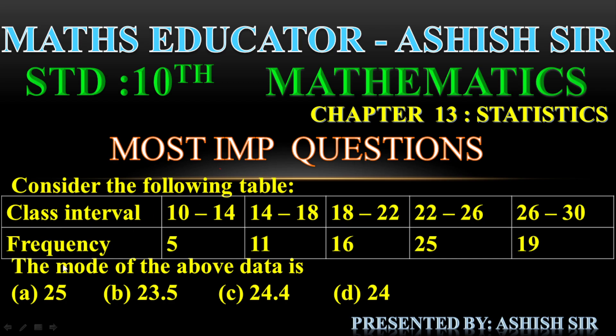Consider the following table. Class interval: 10 to 14, 14 to 18, 18 to 22, 22 to 26, 26 to 30. Frequency: 5, 11, 16, 25, 19. The mode of the above data is - which option is correct?